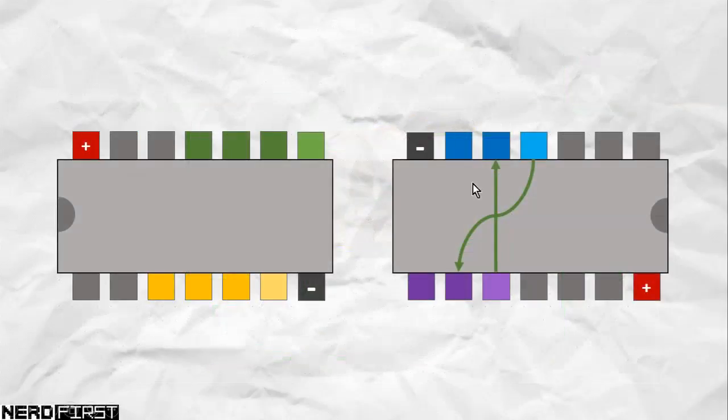Essentially, all we're doing is we're taking the output of one NOR gate, and pointing it to the input of the other, and vice versa. So it's just a little cross like this, that's all we need to do.